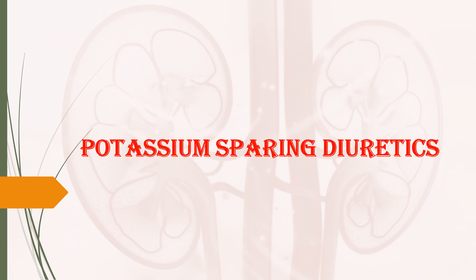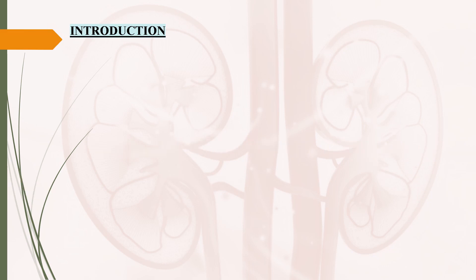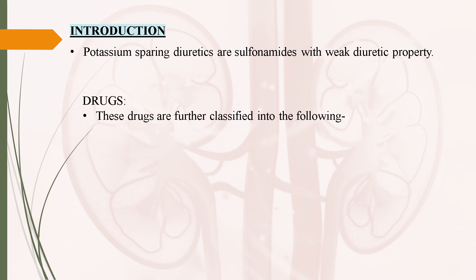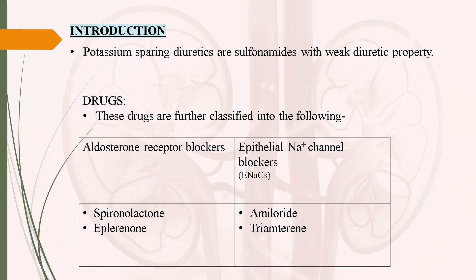Hi guys. I am going to deal with potassium-sparing diuretics. Potassium-sparing diuretics are sulfonamides with weak diuretic property. These drugs are further classified as aldosterone receptor blockers and epithelial sodium channel blockers.